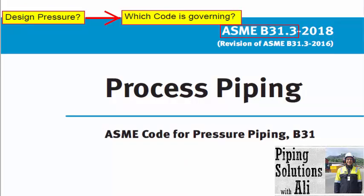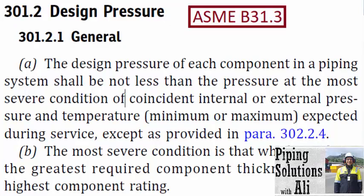Therefore, when you are asked to tell the meaning of design pressure, you should reply which code is governing the project, and then refer to that related code for the definition. Let's assume that we are designing based on ASME B31.3, so we should refer to this code for the definition of design pressure, based on paragraph 301.2 of ASME B31.3.